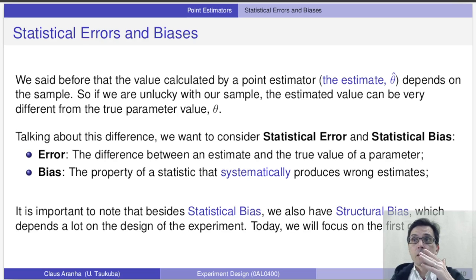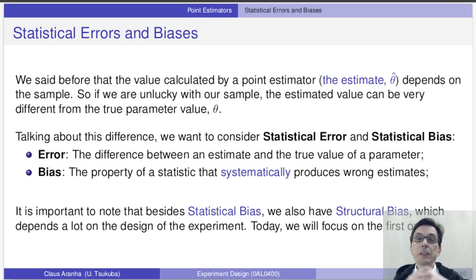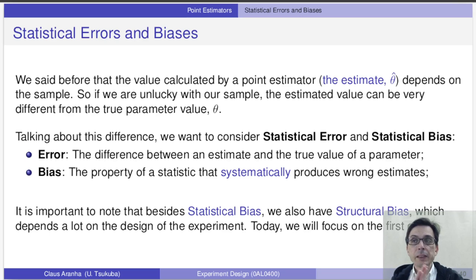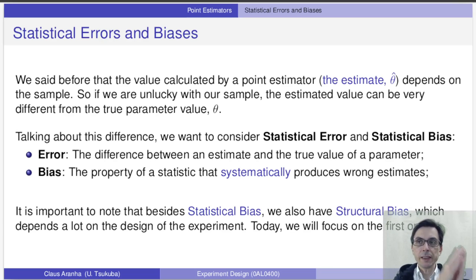When we talk about the difference between the estimated value and the true value, we want to separate this difference into two components: the error and the bias. The error is the natural change that happens because of the variation in our observations. The bias, on the other hand, is a systematic difference between the estimate and the true value.